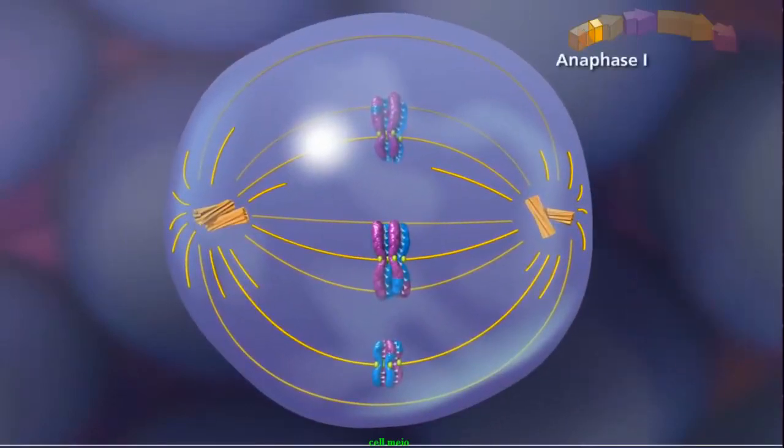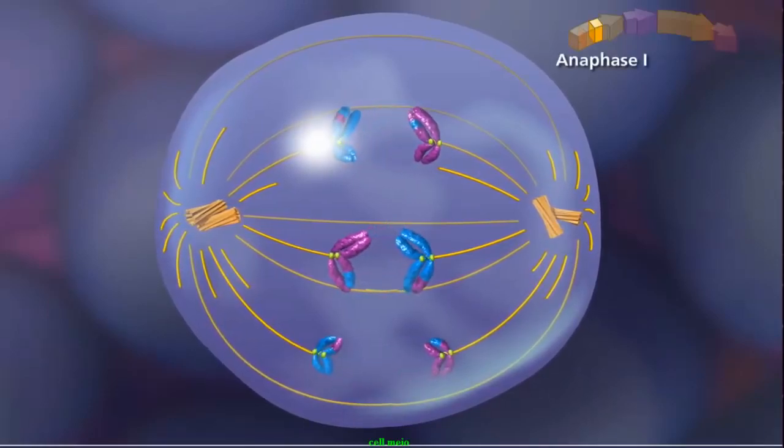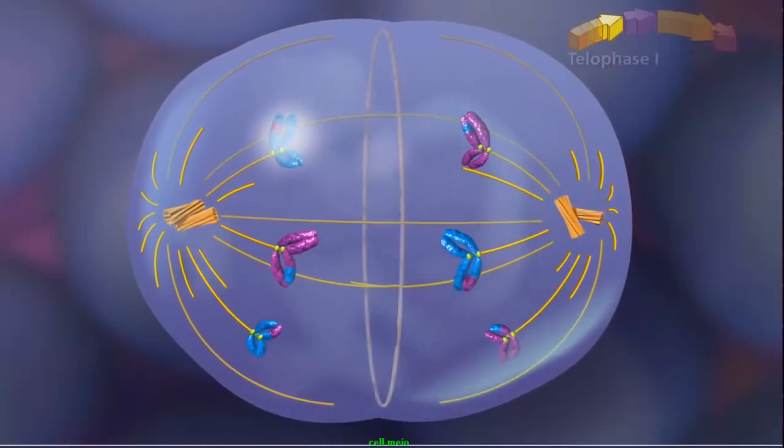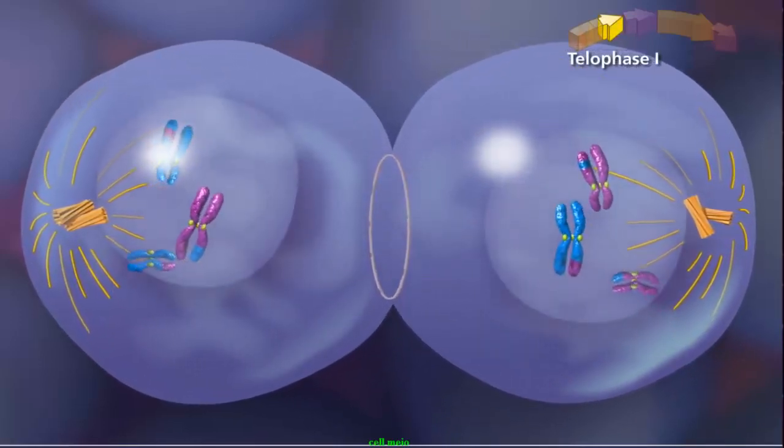In anaphase I, the homologous chromosomes separate and move toward opposite poles. Meiosis I ends with telophase I, when the chromosomes decondense and the nuclear envelope reforms.